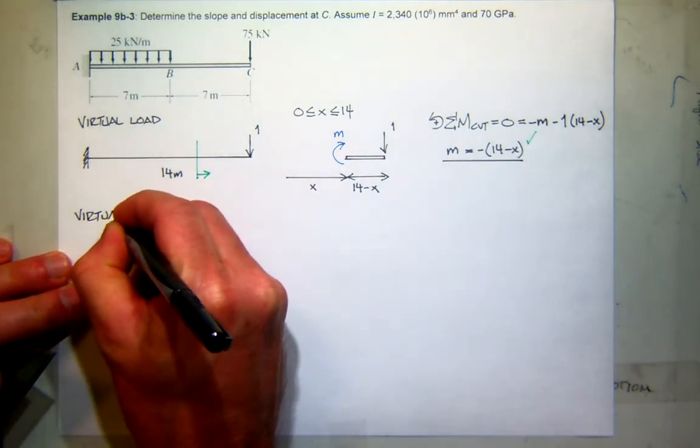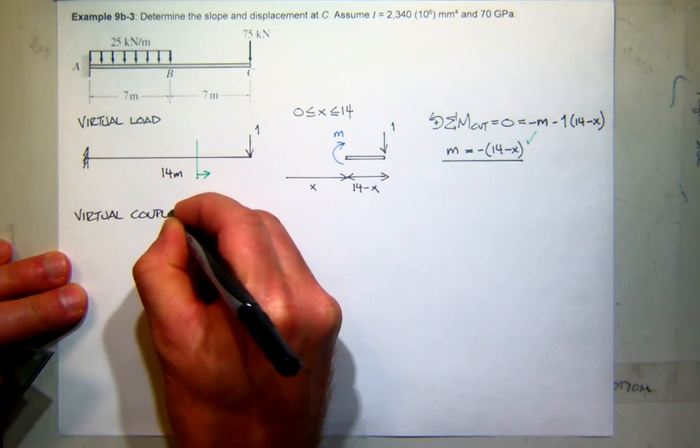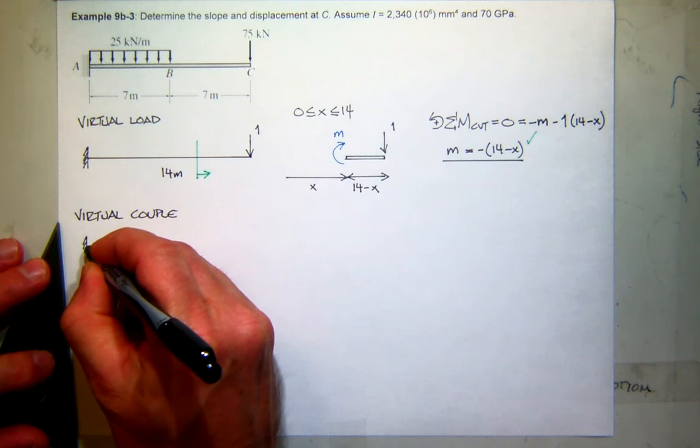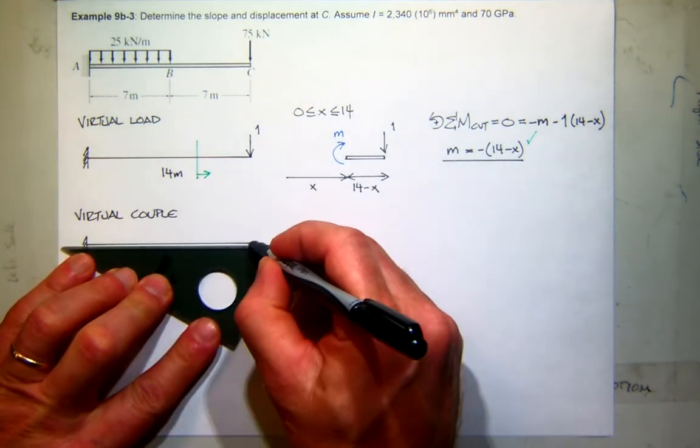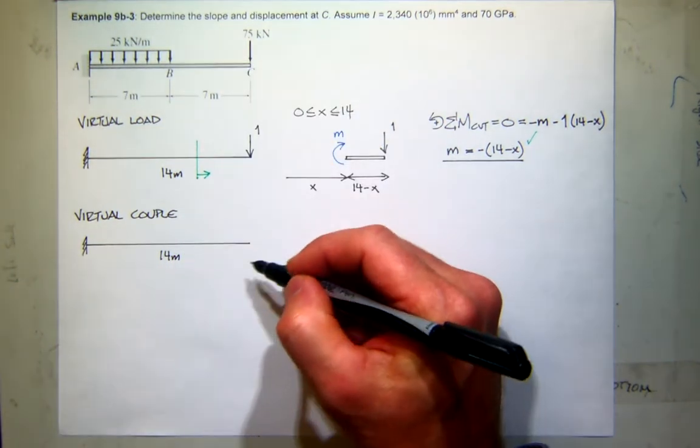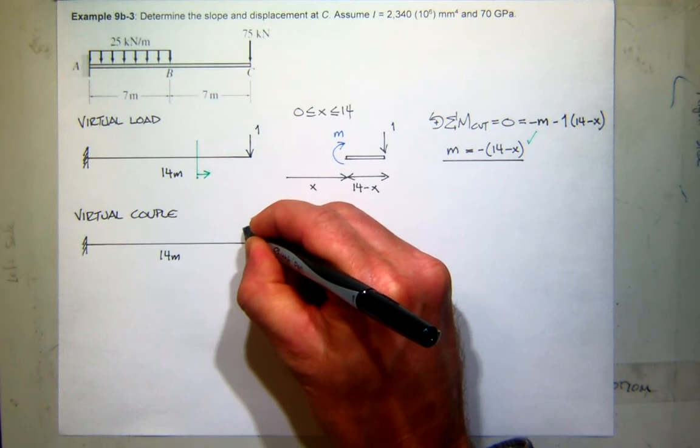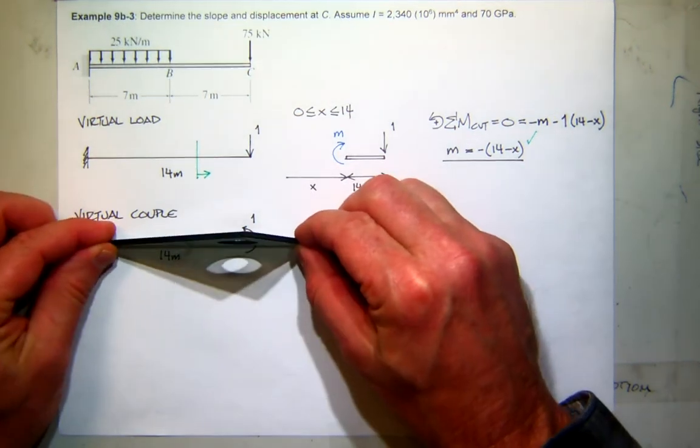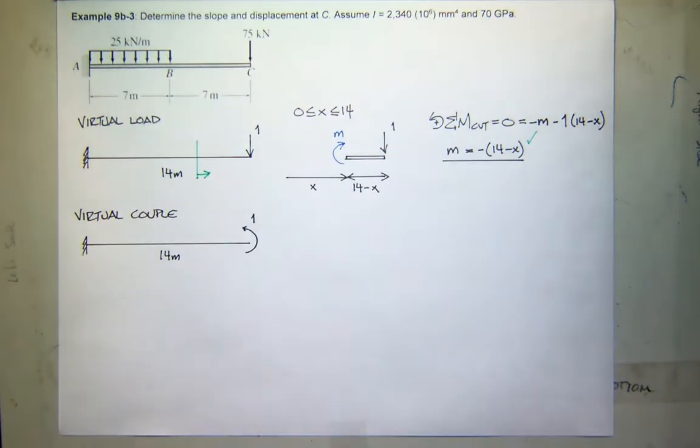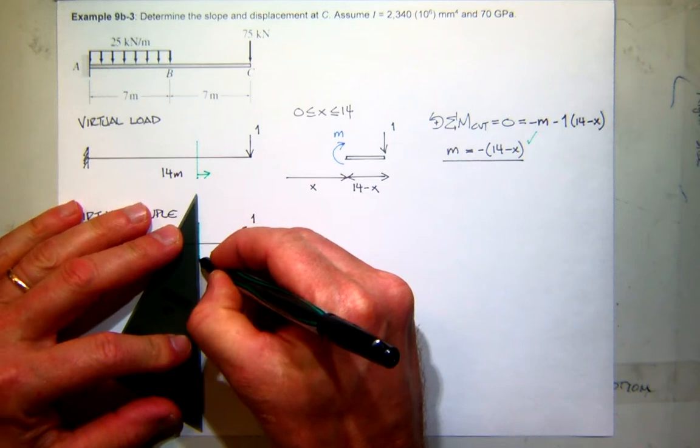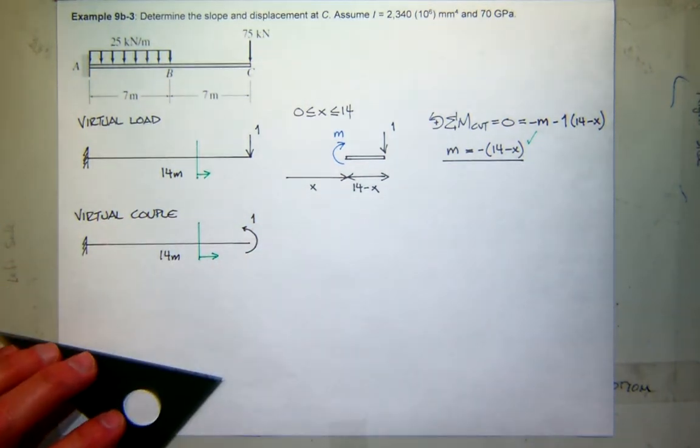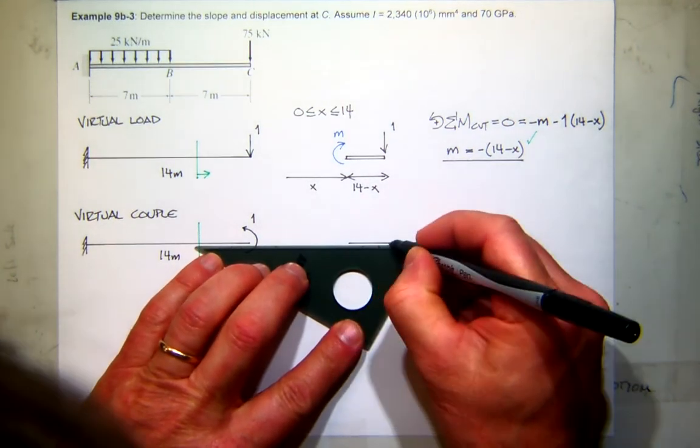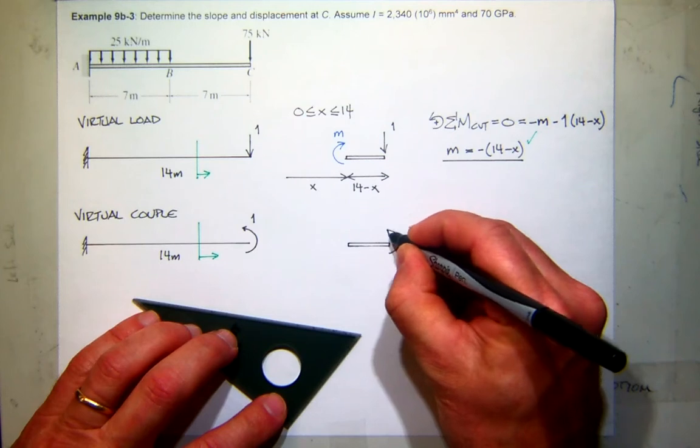Now what about the other one? So this would be the virtual couple, or the moment. So again, we have the same geometry. Now to find the slope, I apply a couple here. And I'm going to apply a couple that looks like that. The reason I'm doing that is when the element under that load bends, it's going to bend this way, which would be a positive slope. So if I get a negative answer, I know it's a negative slope.